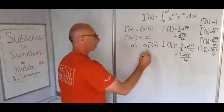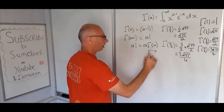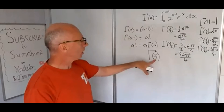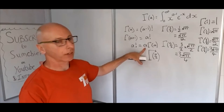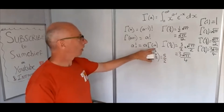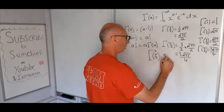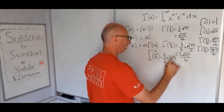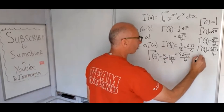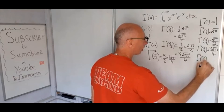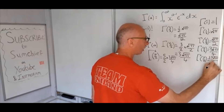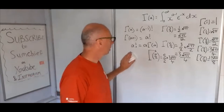For gamma of 7 over 2, using a plus 1 equals 7 over 2, so a equals 5 over 2. Therefore gamma of 7 over 2 equals 5 over 2 times gamma of 5 over 2, which is 5 over 2 times 3 root pi over 4. Working that out gives 15 root pi over 8. You can see a clear pattern forming in these half-integer values.